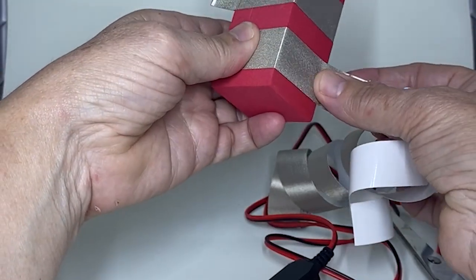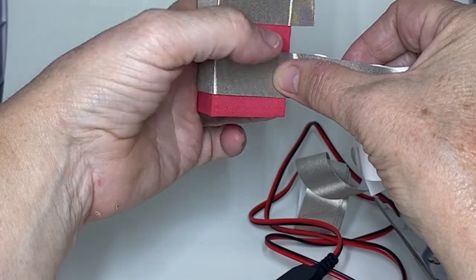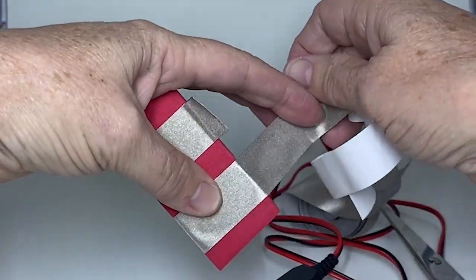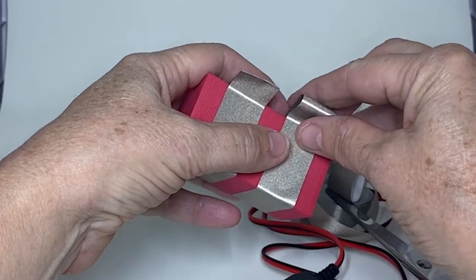Wrap a second piece of conductive tape around the block. Again, leave the end of the tape long. Then fold it back to form a flap.